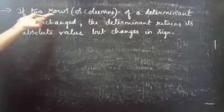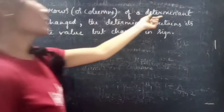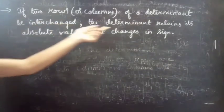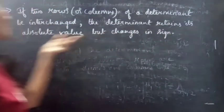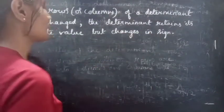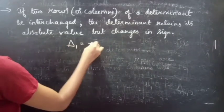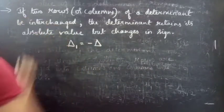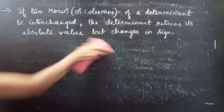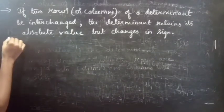Statement: if two rows or columns of a determinant be interchanged, the determinant remains its absolute value but changes in sign — which is nothing but delta1 equals minus delta. So if two rows or two columns of a determinant be interchanged.